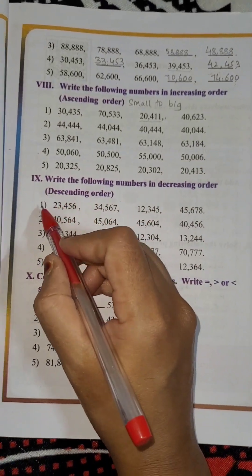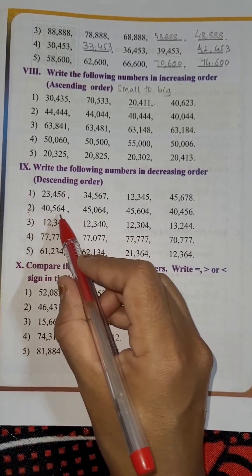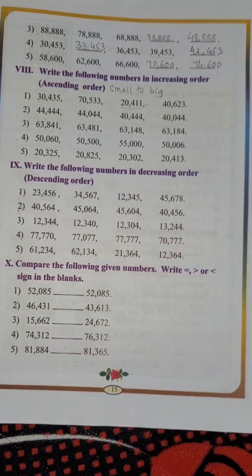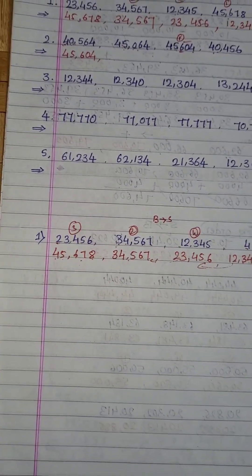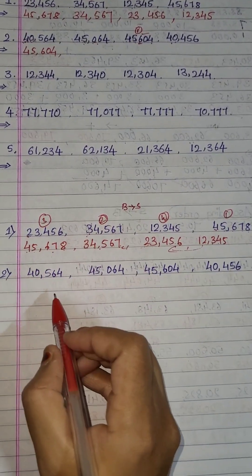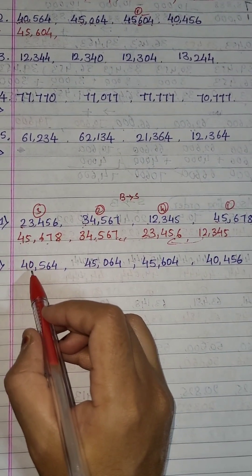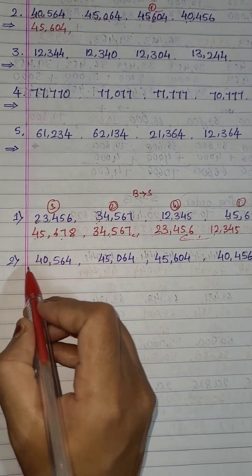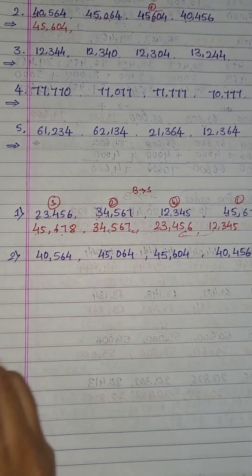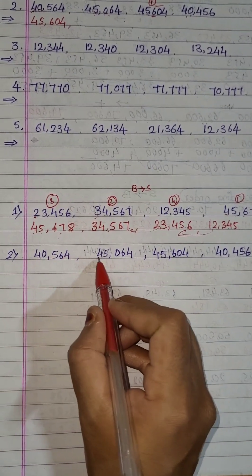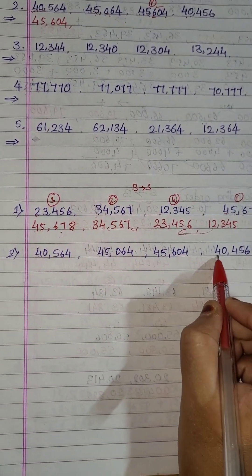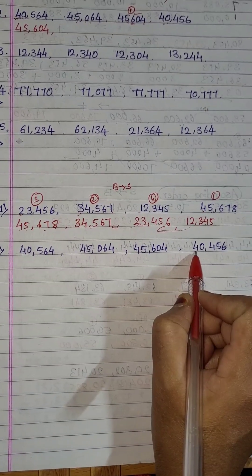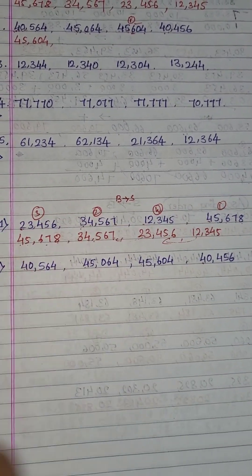Now the second one: 40,564 — the same example I have written here. So let's start this one. Here also you have to apply the same method. First we have to start from the highest place. Here 4, 4, 4, 4 — so we are not able to recognize which is the biggest number. So leave this one and move to the next place.